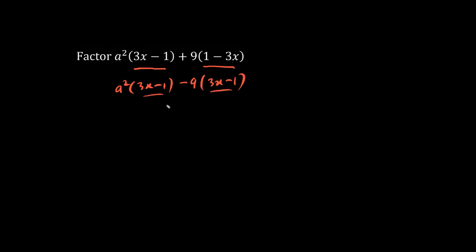We now have twins. Let's pull out this GCF, 3x minus 1. We copy in a squared minus 9.